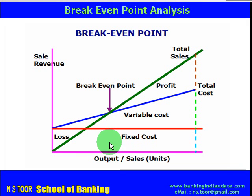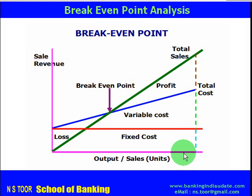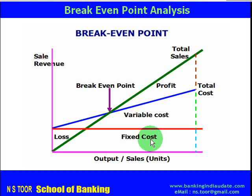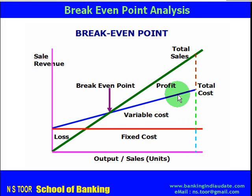Breakeven can also be depicted by a graph. The portion representing fixed cost is shown, and the portion between the red line and blue line is variable cost, which changes with the level of sales. The area from the pink line to the blue line represents total cost, which is partly fixed and partly variable. The green line represents sales, and where the sales line meets the total cost line, that level is called the breakeven point. Below this there is loss, above this there is profit, and at breakeven point there is no profit no loss.